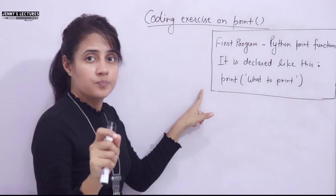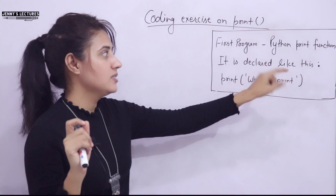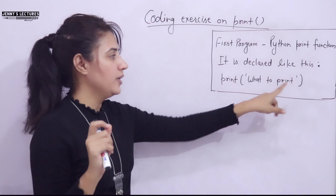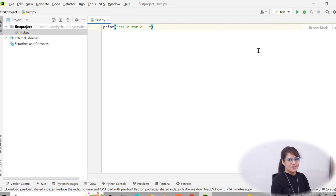Here is the exact output I want on the screen — three lines on the console. The first line: 'First Program - Python print function'. Then it is declared like this with a colon and print, then single quote, then what to print. These three lines should be printed exactly as shown. So pause the video and do this exercise.